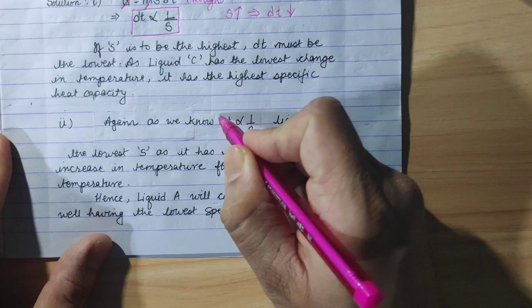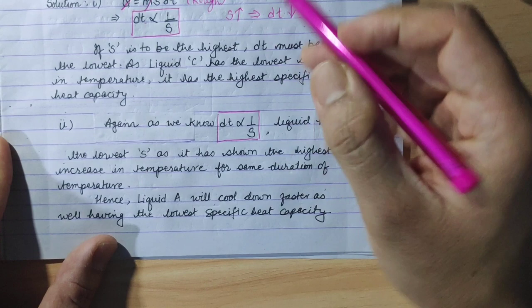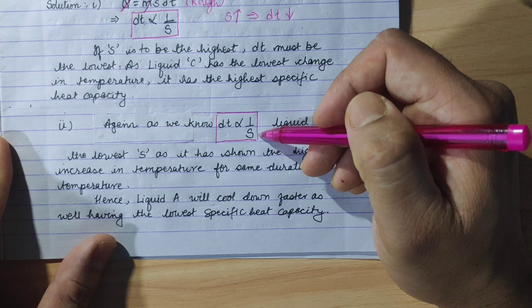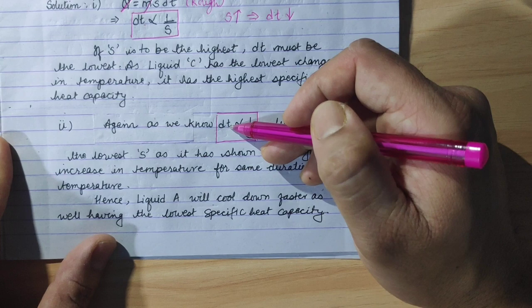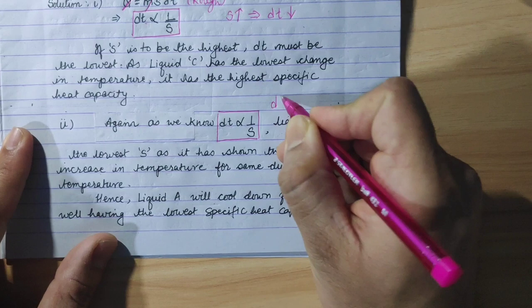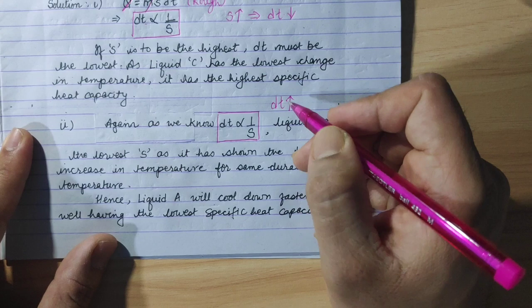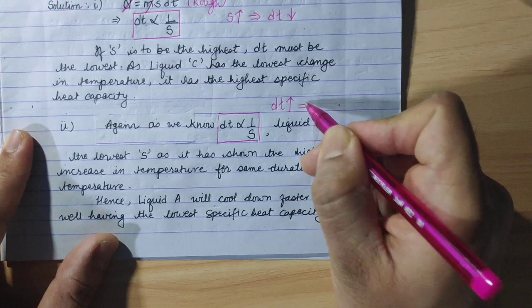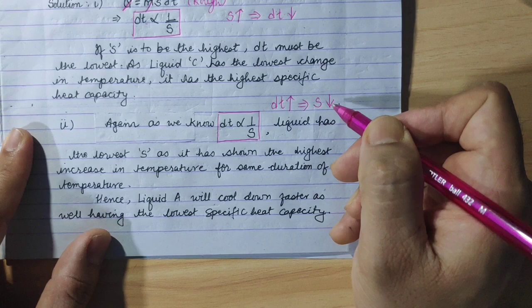Again, we know that ∆T is inversely proportional to specific heat capacity. To cool down faster, the change in temperature must be greater. Since they are inversely proportional, if specific heat capacity is less, change in temperature will be greater.